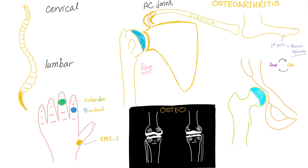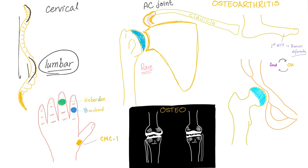Osteoarthritis can affect the cervical and the lumbar spine — not the thoracic, sacral, or coccygeal. Interestingly, osteoarthritis affects those spinal regions that are convex anteriorly. The lumbar makes sense because it bears the entire body weight. It can also affect the AC joint — the acromioclavicular joint — though this is rare.